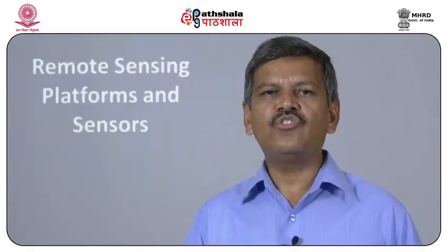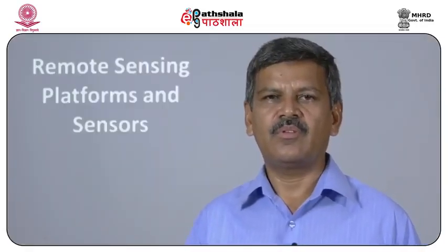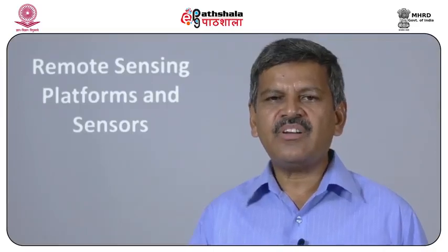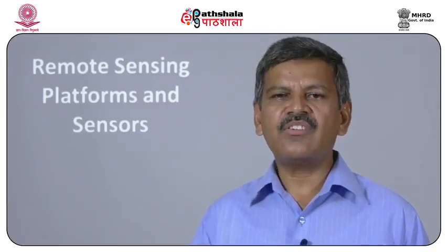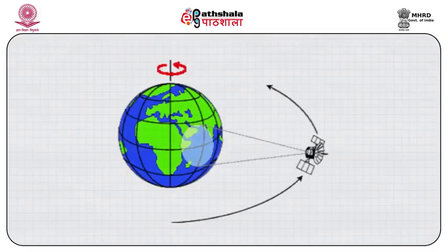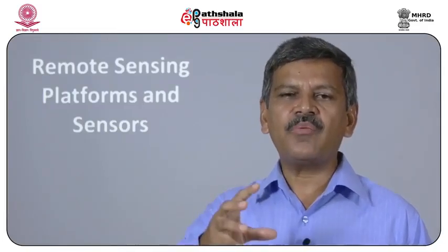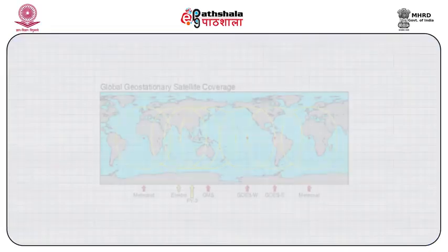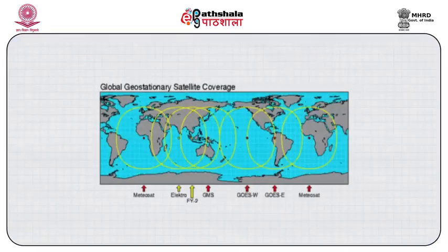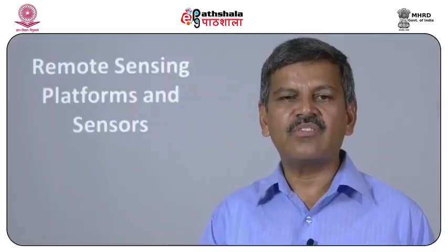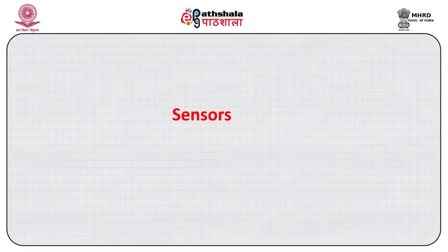Come to the geostationary satellite. This type of satellite is fewer in number than sun-synchronous satellites. Sun-synchronous orbit is also known as polar satellite orbit.